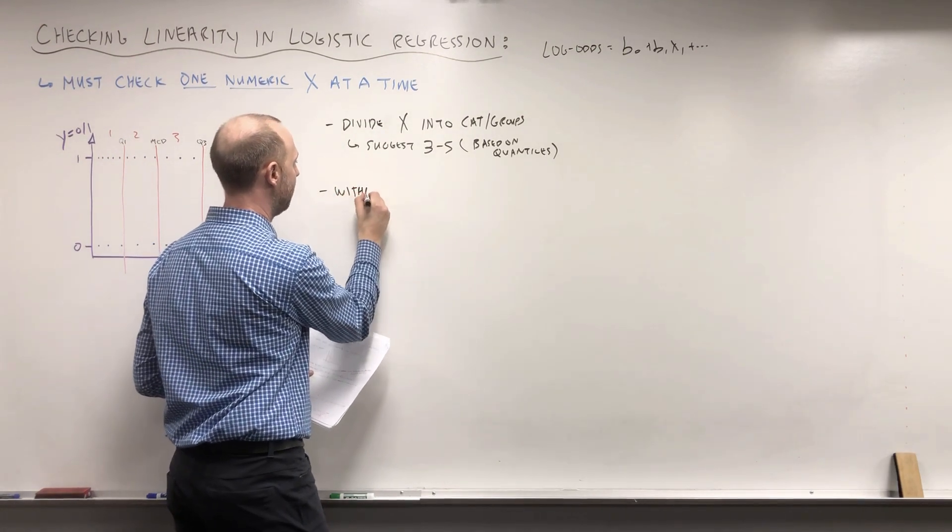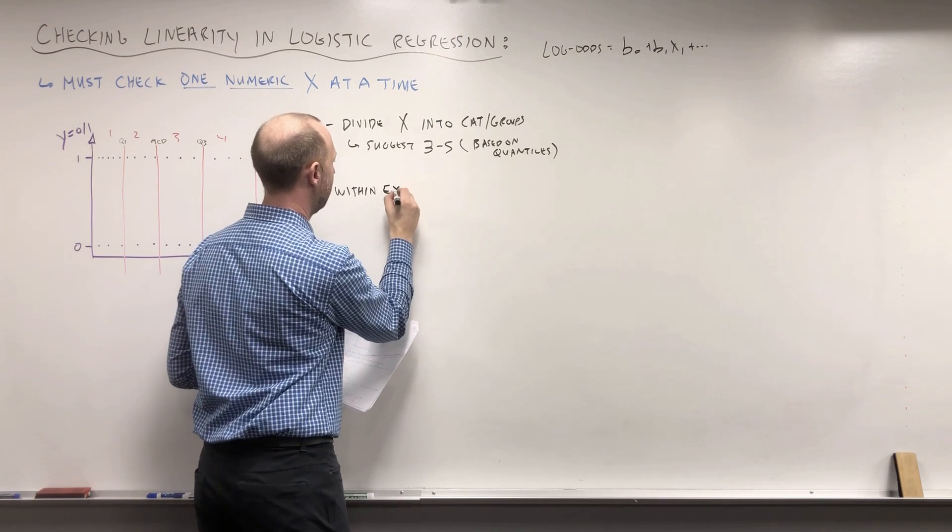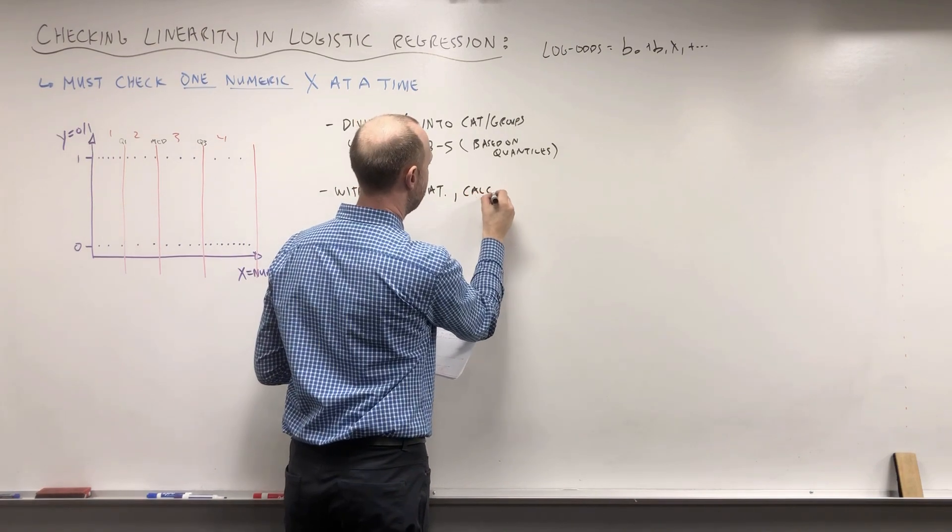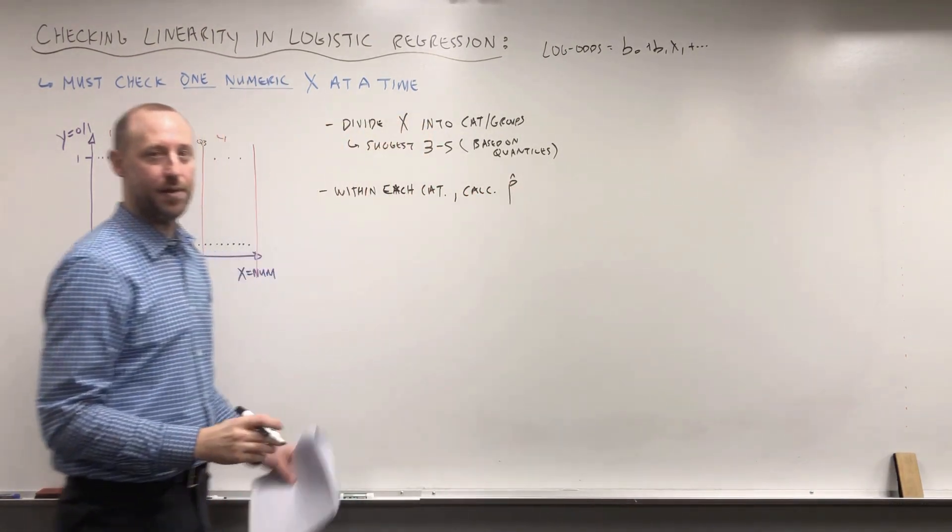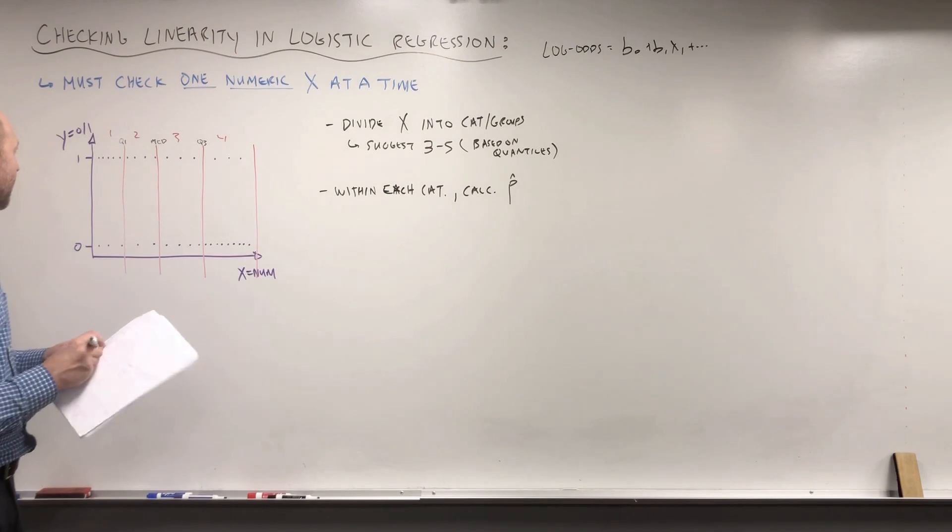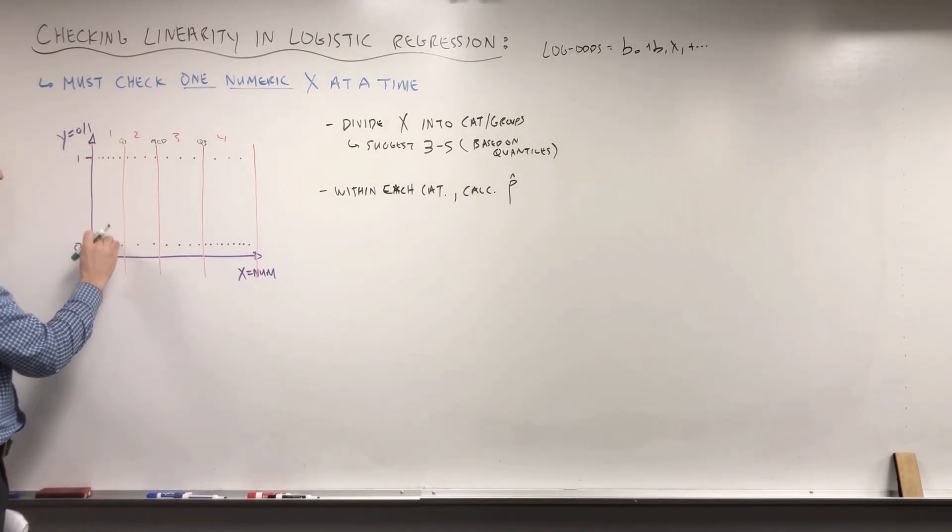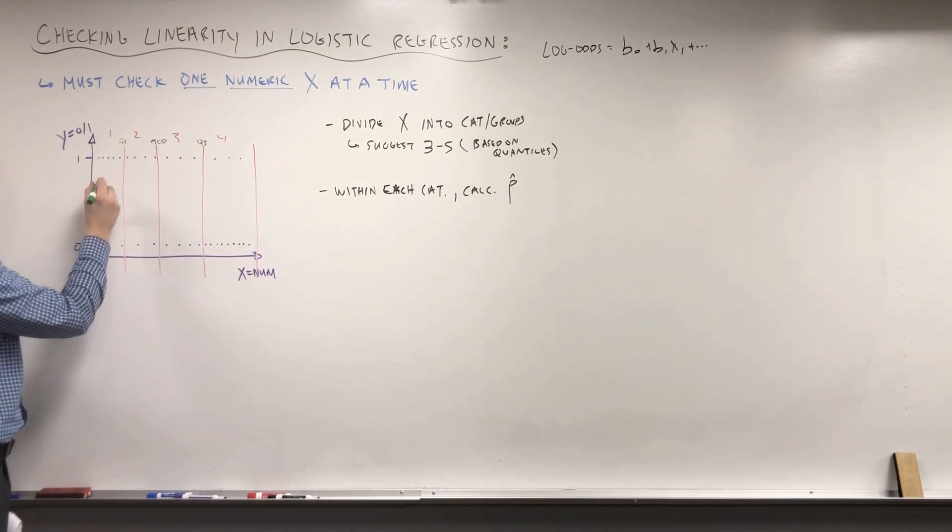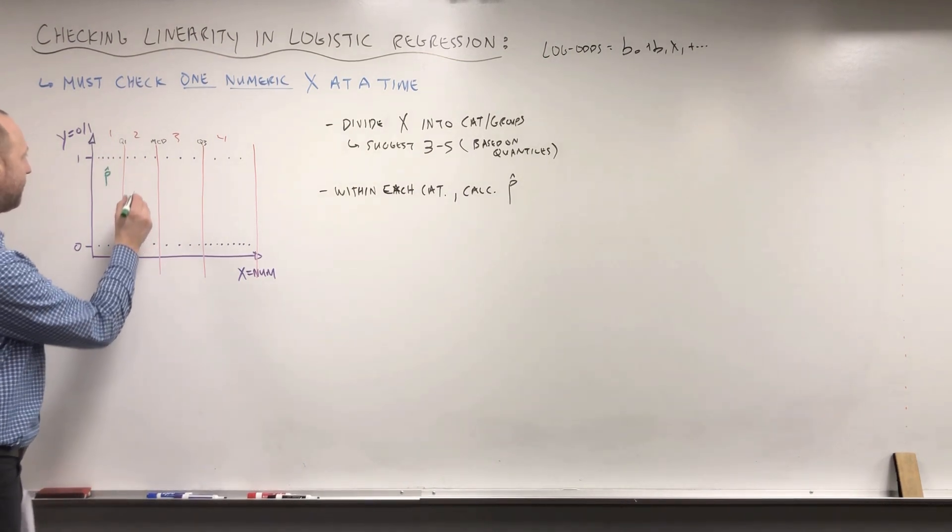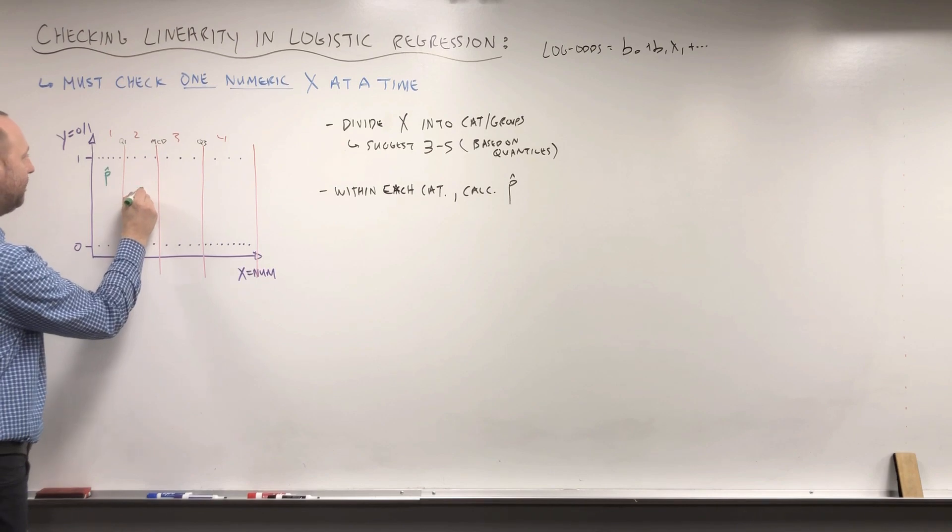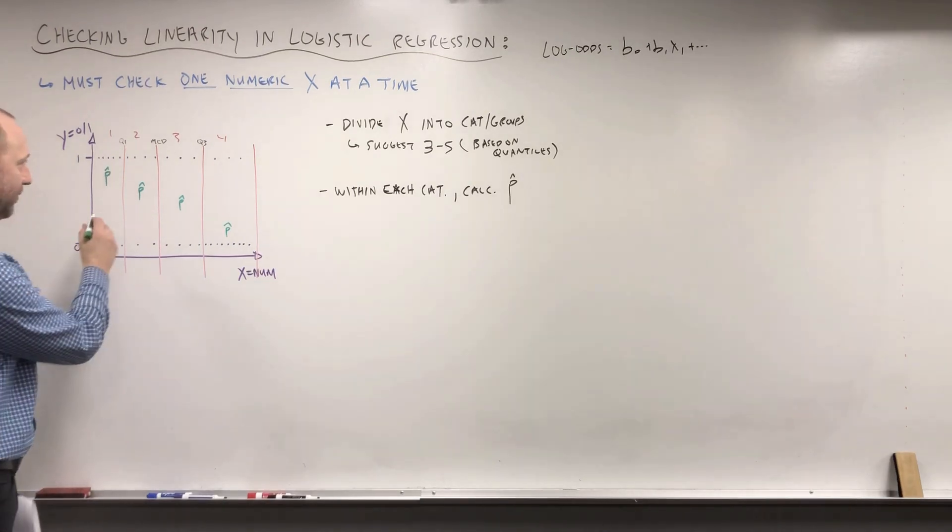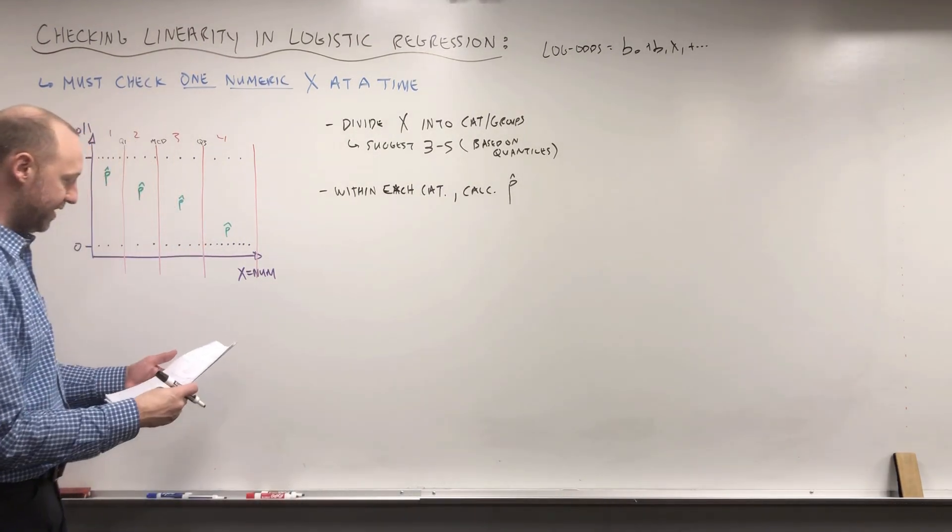Then what you're going to do is within each category, calculate p-hat, the probability of the disease. So what I'm saying here is within category group one, we'll look at how many people are there, how many have the disease, how many don't, and calculate the proportion within there. Then for category two, again calculate the proportion, category three, and for category four. So calculate the proportion with the outcome or proportion with the disease in each category.